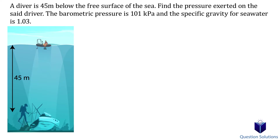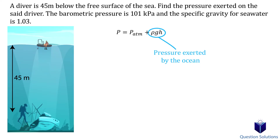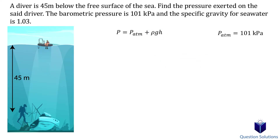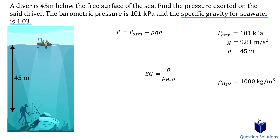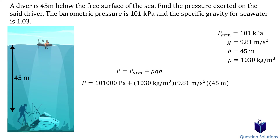In this problem, we need to find the pressure exerted on a diver 45 meters below the surface of the sea. We calculate the pressure exerted by the ocean and add it to atmospheric pressure, so our equation is P = P_atm + rho × g × h. Since we're given the specific gravity of seawater rather than its density, we first calculate rho = SG × rho_water, then plug all values into the equation to get our answer.